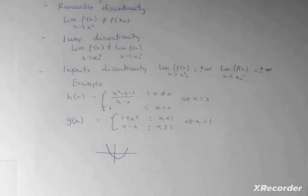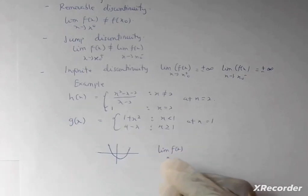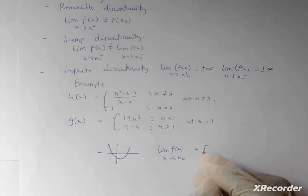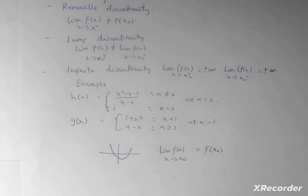In continuity and limits, we say that a function is said to be continuous if when I find the limit of f(x) as x approaches x₀, it should be the same as the functional value at x₀. Meaning, if I put x₀ inside the function, the value I get should be the same as finding the limit as x approaches x₀. That is the only condition for continuity.